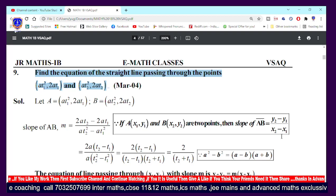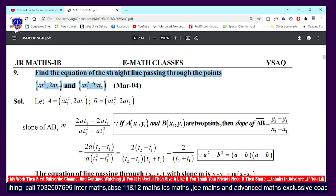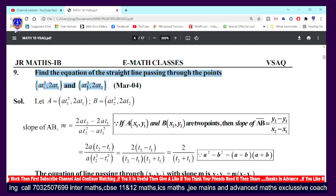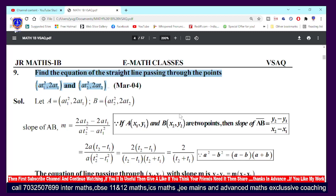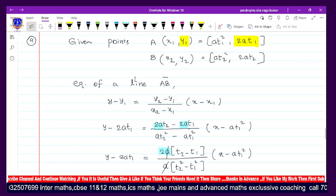Find the equation of the straight line passing through the points (a₁², 2a₁) and (a₂², 2a₂). So coming to the solution, first let me name the given points.